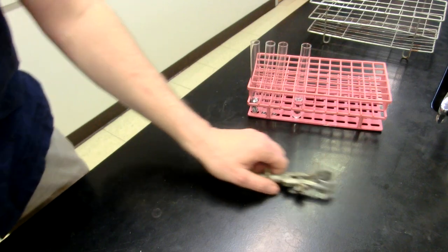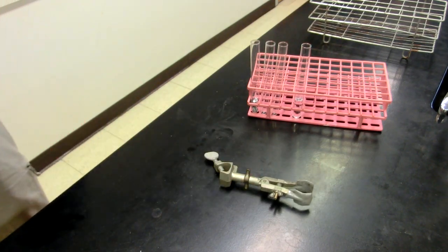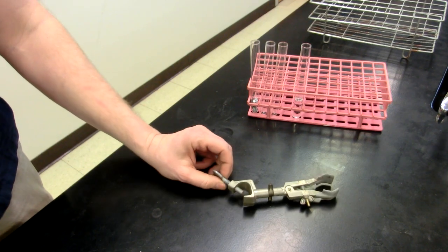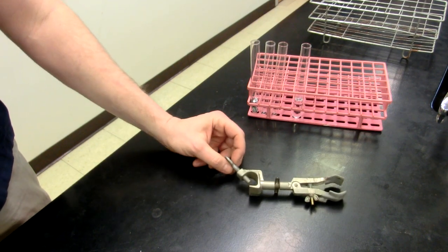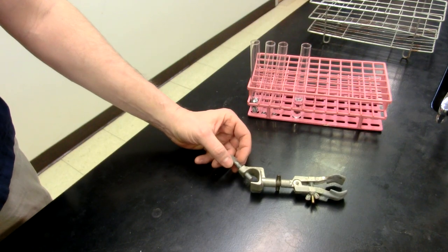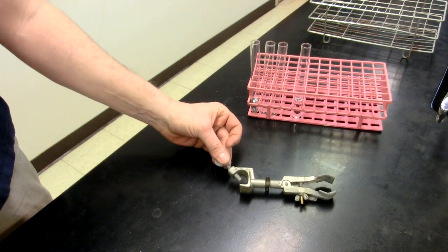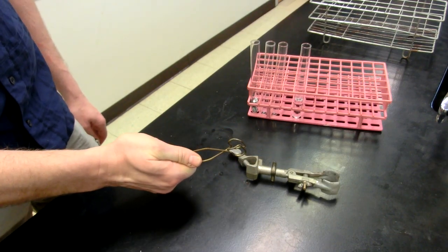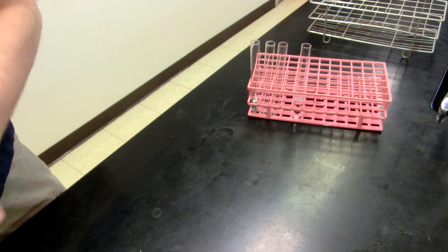This one over here is a test tube clamp. Test tube clamp is designed to clamp into position or stay in position on a ring stand. A later video will be used to describe how to use this properly. For right now, we're going to be spending more time talking about the test tube holder instead.